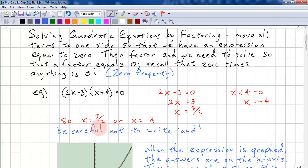And you need to be careful not to write 'and'. When we say this or that, it can be either this or that. But if we say 'and', it means it has to equal this and that. But it can't equal two different values at the same time. So that's why we don't use 'and'.